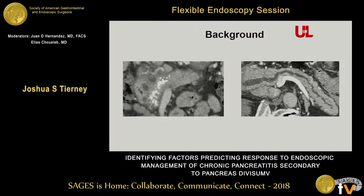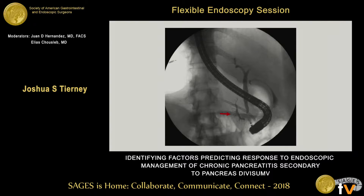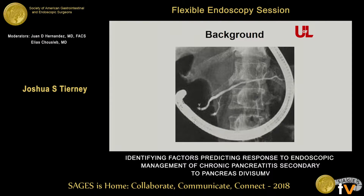Here are the two main morphologic changes in chronic pancreatitis: calcific disease, shown on the left, or dilated pancreatic duct. This is a representative patient with chronic pancreatitis. Injection of the ventral duct shows a complete divisum. When you find this on ERCP, you know your work isn't done — you need to pull the scope back and twist it to the right, and that's usually where you'll find the minor papilla.